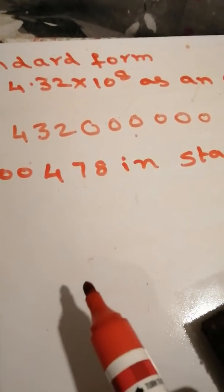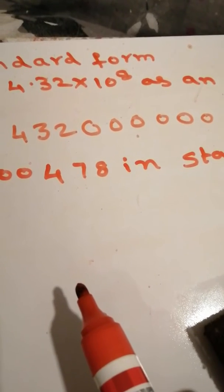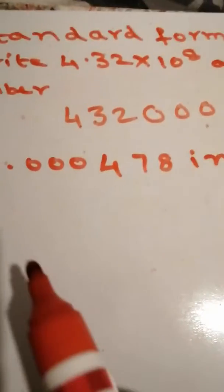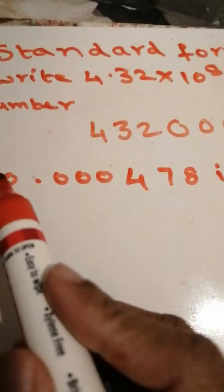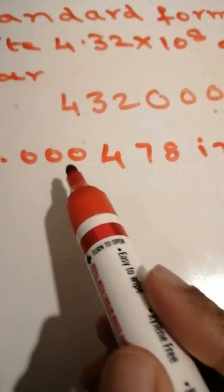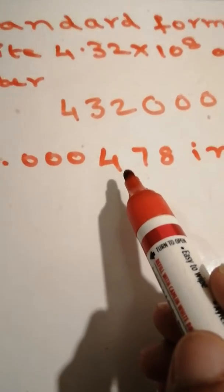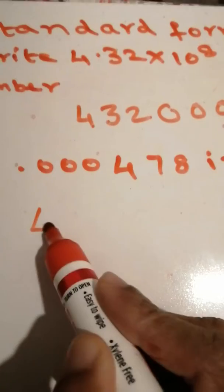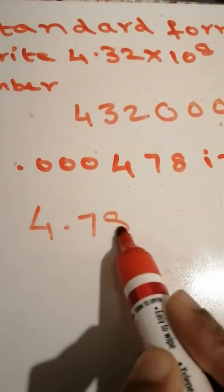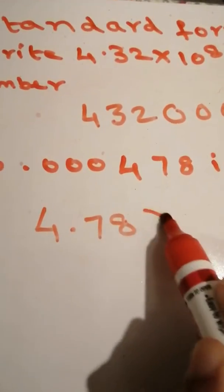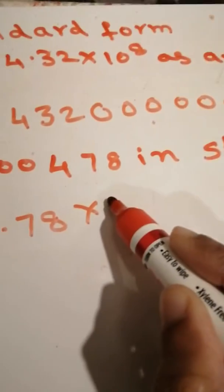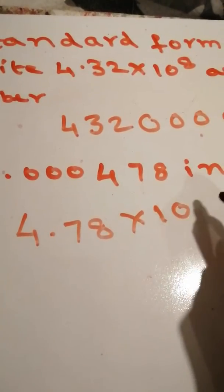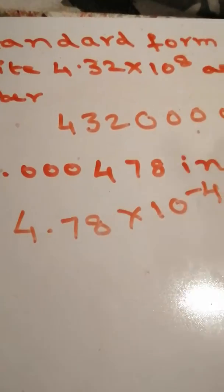Now we can see how can you write 0.000478 in your standard form. 4.78 into 10 to the power of minus 4 in standard form.